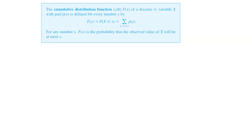The cumulative distribution function, or CDF, denoted by F(x), of a discrete random variable X with probability mass function P(x) is defined for every number x. F(x) is equal to the probability of any value less than or equal to x. Since we have a discrete variable, it is the summation of all of those probabilities.